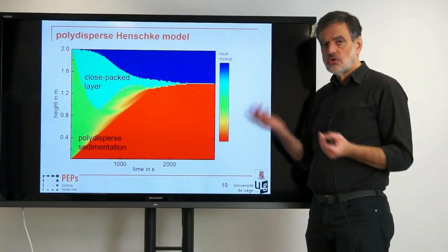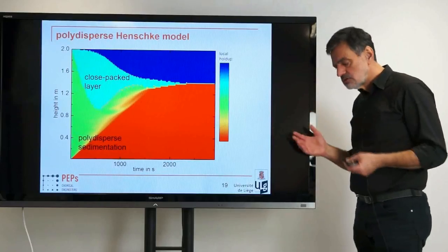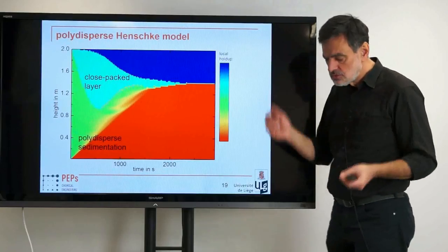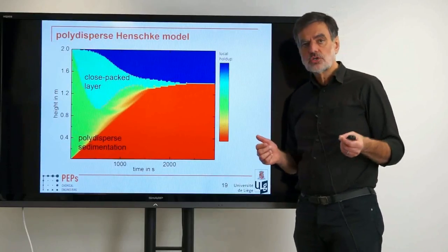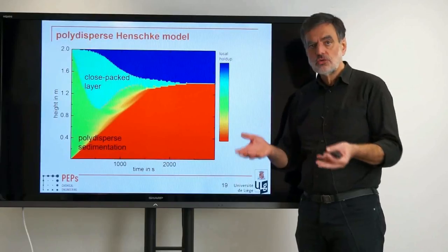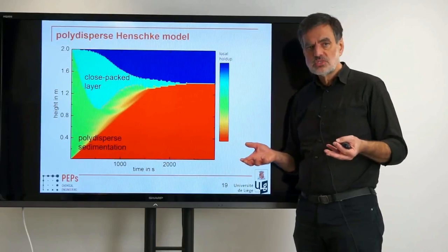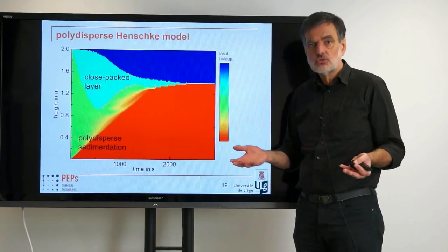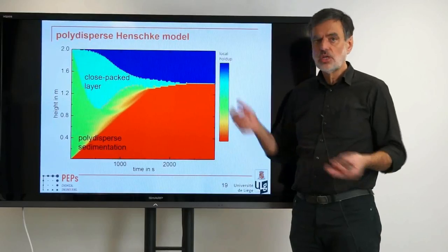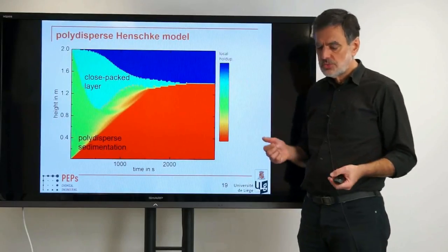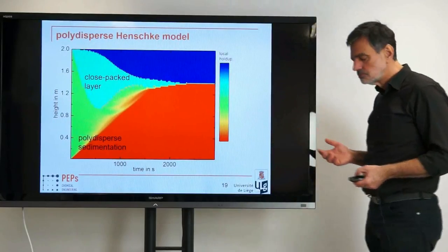This applies to a variety of applications. The first one in feedstock production: if you drill for crude oil, you always get some water with that, and you have to separate the crude oil and the water in such a settler — and we are able to predict that with this type of model.